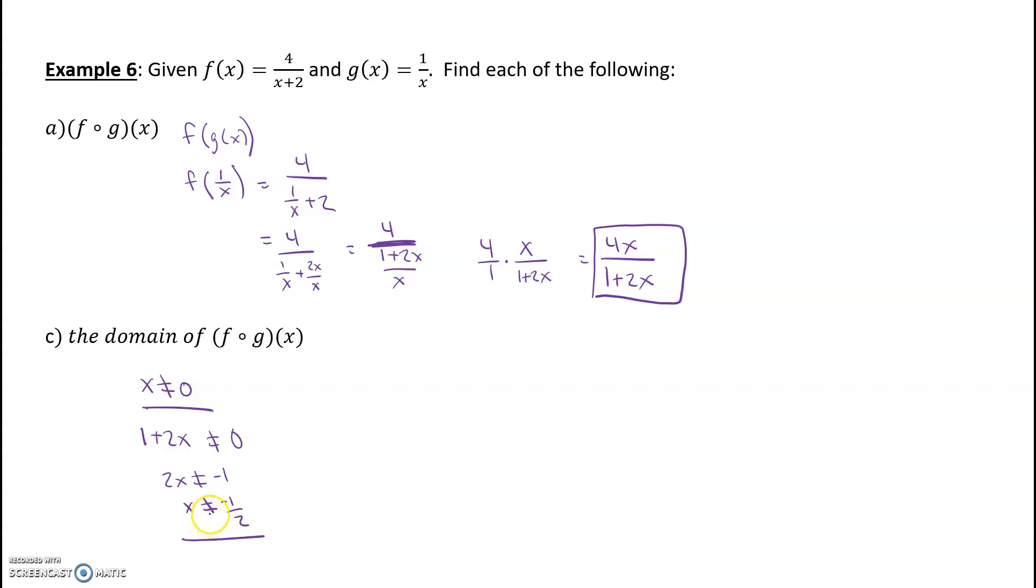Alright. Let's go ahead and write it out. So we have negative infinity all the way up to negative 1 half. Again, it cannot equal negative 1 half. Now we're going to pick back up at negative 1 half. And we're going to go all the way to 0. Cannot equal 0. And we're going to pick up at 0 and finish off to infinity.